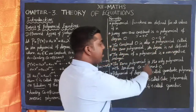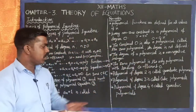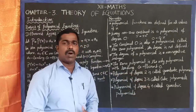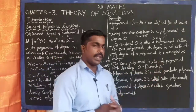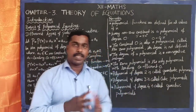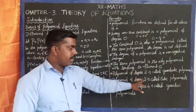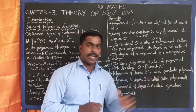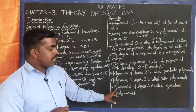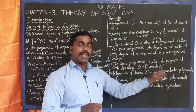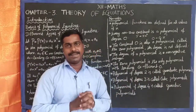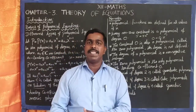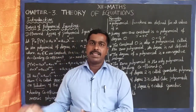A polynomial of degree 2 is called a quadratic polynomial. A polynomial of degree 3 is called a cubic polynomial. A polynomial of degree 4 is called a quartic polynomial. Thank you students — next, let us see the example problems.